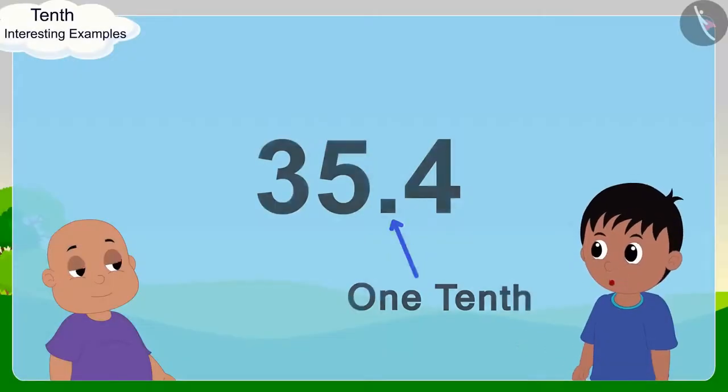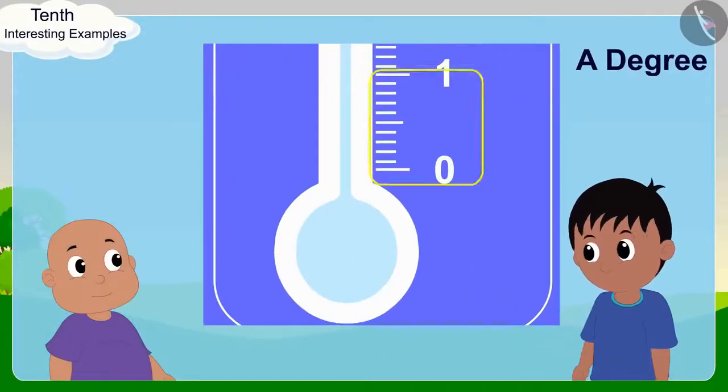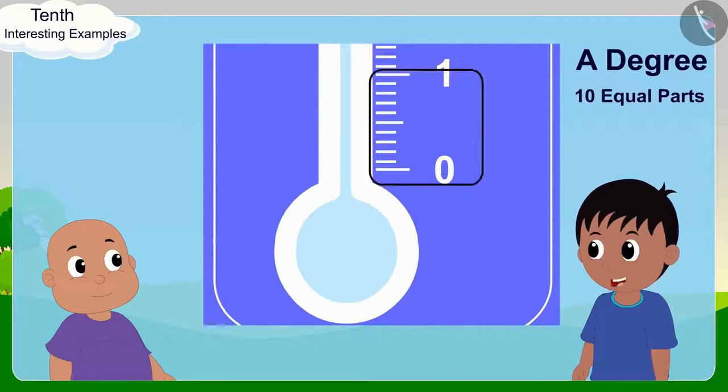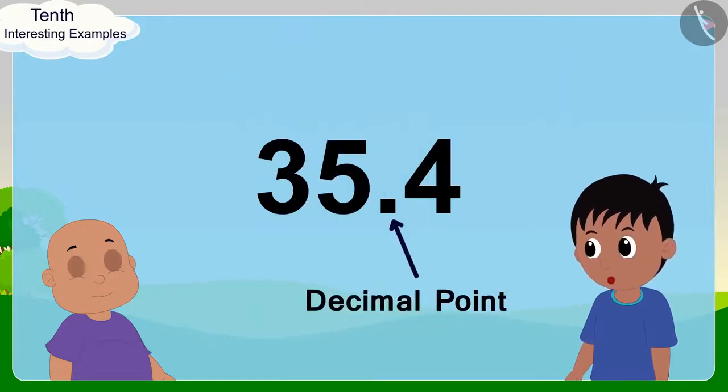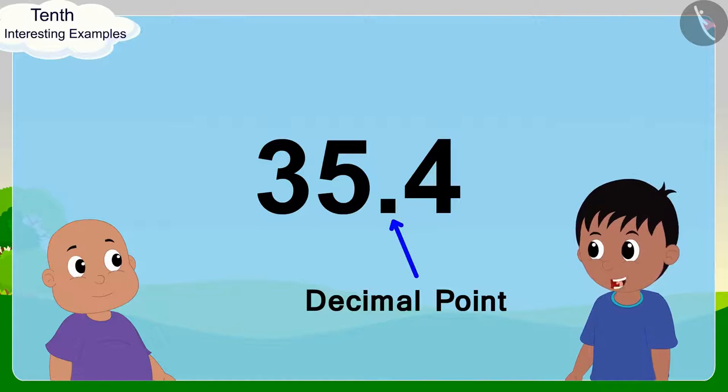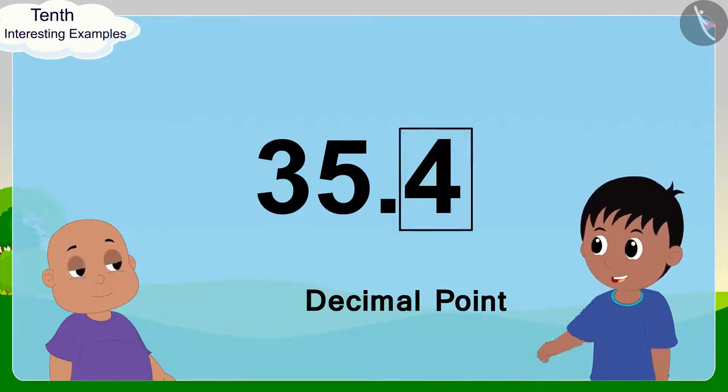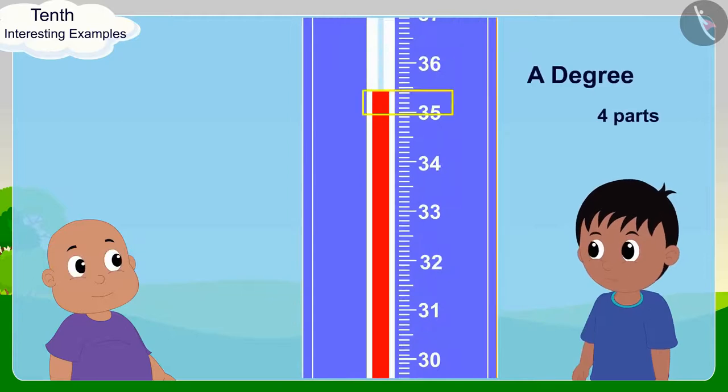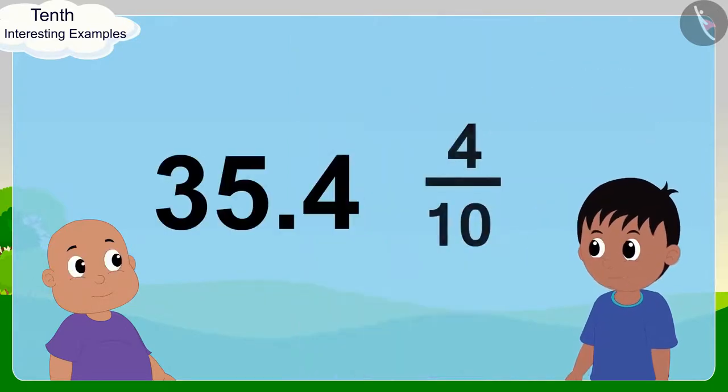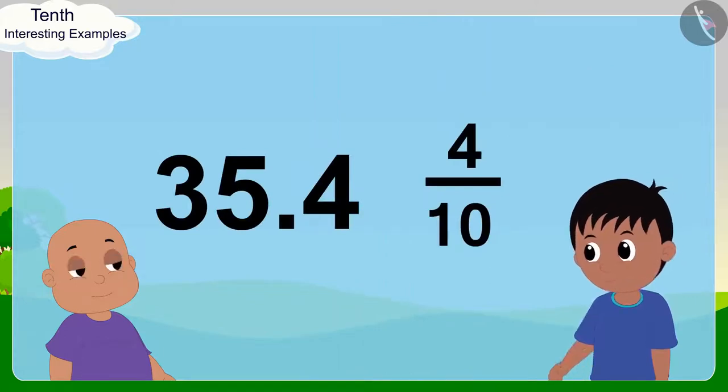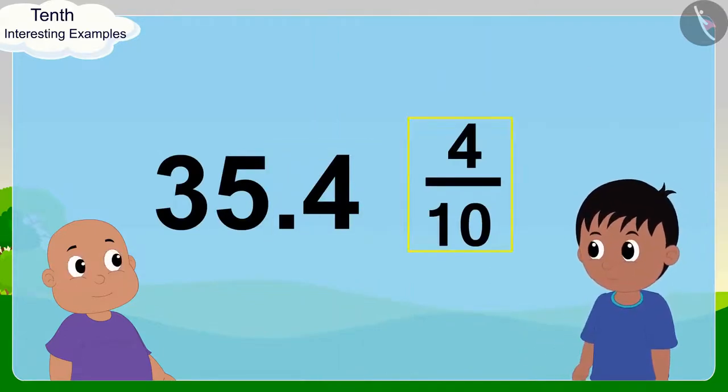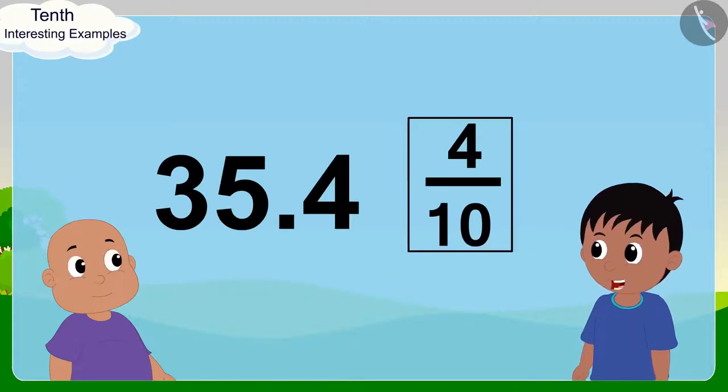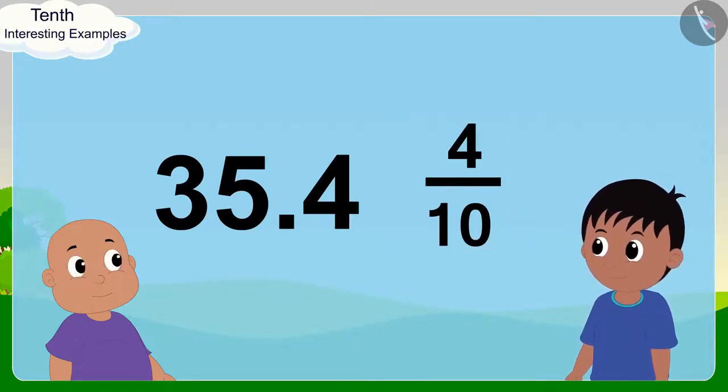One tenth indicates that a degree is being divided into 10 equal parts. And because the number after the decimal point is 4, we can say that here we are taking 4 out of the 10 parts of a degree. In this way, we can also write 0.4 as 4 tenths in the form of a fraction. Raju explained to Bablu.